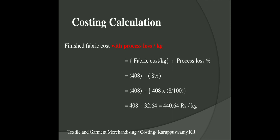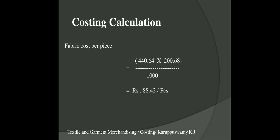Adding all these gives 408 rupees as fabric cost per kg. The next step is to account for process loss. When you give 100 kg of yarn you get only 92% as finished fabric, so you include the process loss percentage. Process loss is 8% of 408 rupees: 408 × 8 ÷ 100 = 32.64 rupees. Adding 408 + 32.64 gives a fabric cost of 440.64 rupees with process loss included.